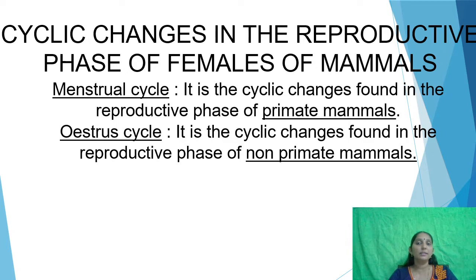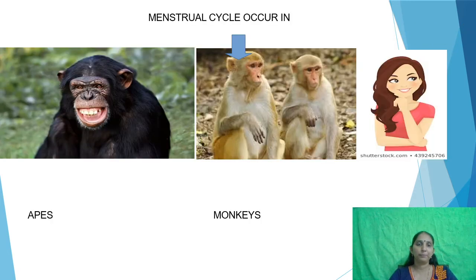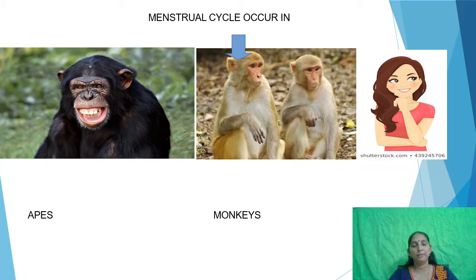The cyclic change in non-primate mammals is called the estrous cycle. In the menstrual cycle, there will be vaginal bleeding, also known as menstruation.